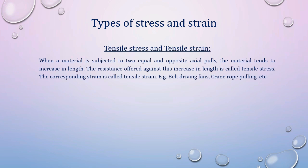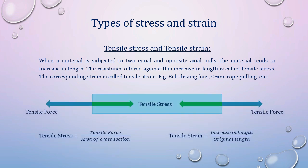Tensile stress and tensile strain: when a material is subjected to two equal and opposite axial pulls, the material tends to increase in length. The resistance offered against this increase in length is called tensile stress. The corresponding strain is called tensile strain.